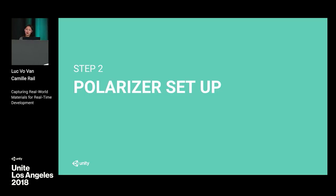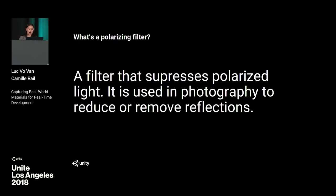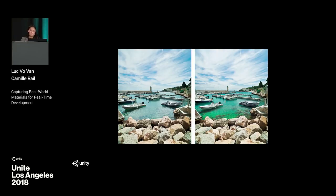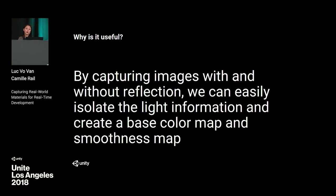Step two is the polarizer setup. What's a polarizing filter? It's a filter that suppresses polarized light — it's used in photography to reduce or remove reflections. Photographers put polarizing lenses on their camera and rotate them to get a clear picture without any reflection. By capturing images with and without reflection, we can easily isolate the light information and create a base color map and a smoothness map.